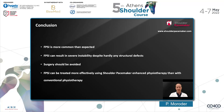To conclude: functional posterior shoulder instability is more common than expected and results in severe instability despite hardly any structural defects visible on MRI and CT scans. Surgery in these patients should be avoided as long as possible and should only be a last resort in case of persistent instability despite adequate conventional or advanced physiotherapeutic treatment. What we saw in our trials is that functional posterior shoulder instability can be treated more effectively using shoulder pacemaker-enhanced physiotherapy than with conventional physiotherapy alone. Thank you very much for letting me share these exciting new developments in the field of posterior shoulder instability, and I hope to see you soon.